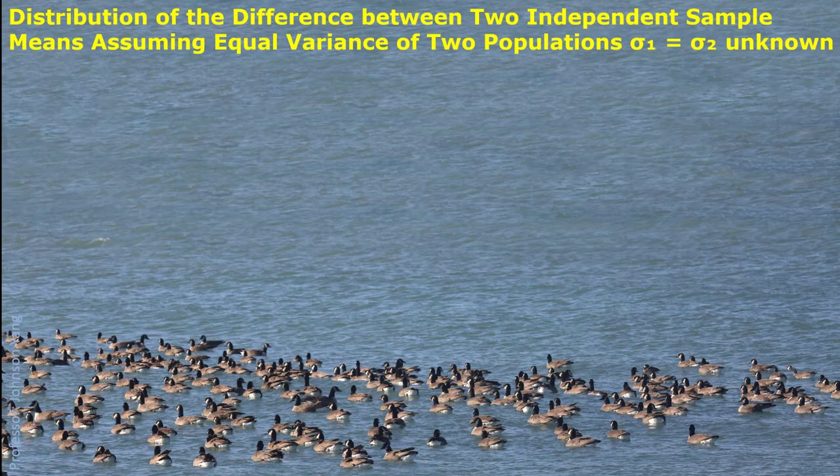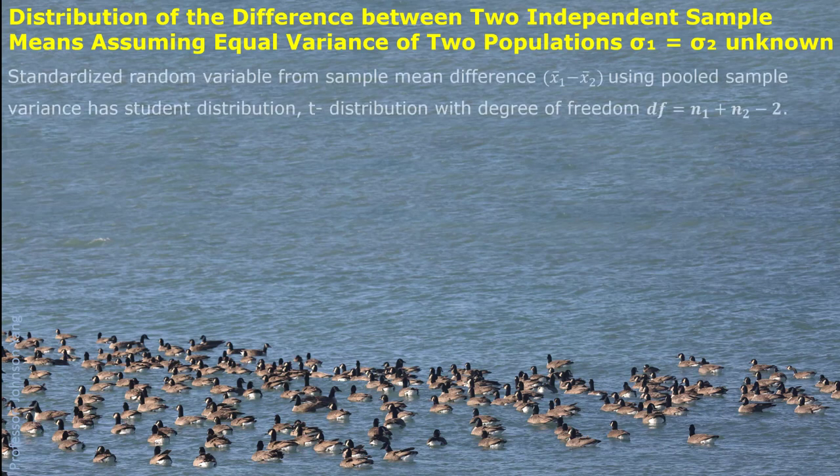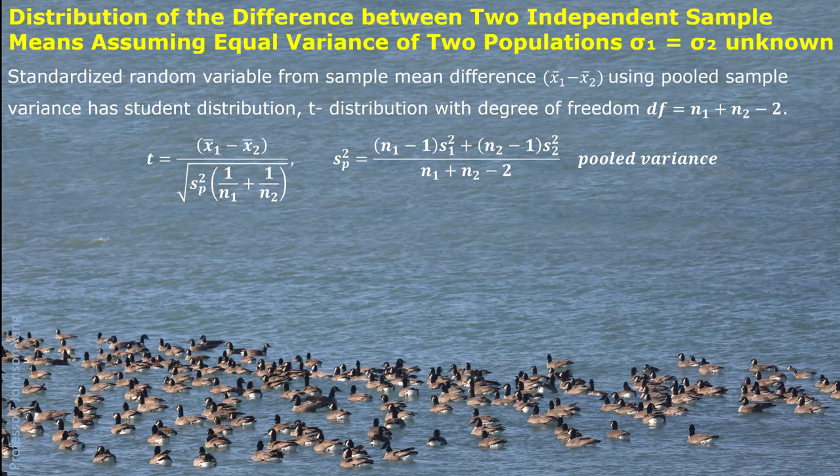If the two population standard deviations are not known, but we can assume the two populations have equal variance, then the two independent samples can be mixed together as one big sample. This is called a pooled situation. When we use this pooled technique, the standardized sample mean difference also has a Student distribution with degrees of freedom n1 plus n2 minus 2. The pooled variance is expressed by the formula on the screen.